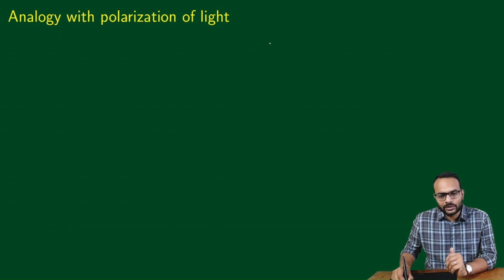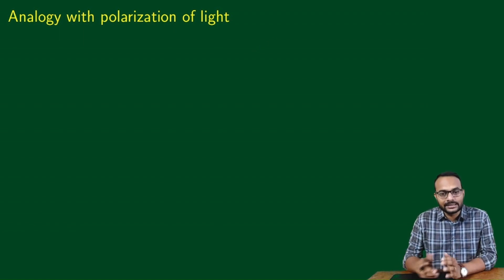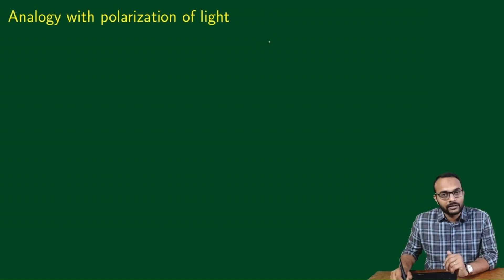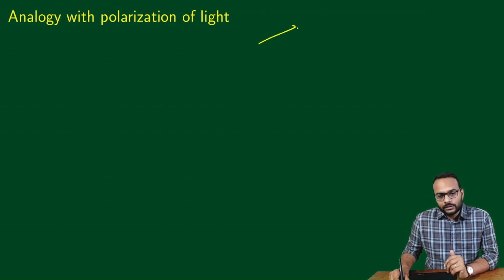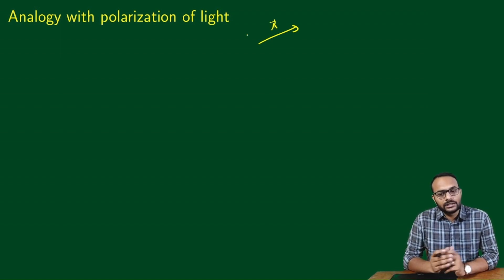We know about vectors. Let us talk about vectors in a two-dimensional space — in the plane of this screen, for example. You could think of a vector as an arrow like this. We call this as vector A.